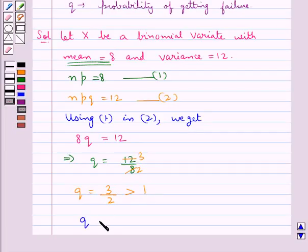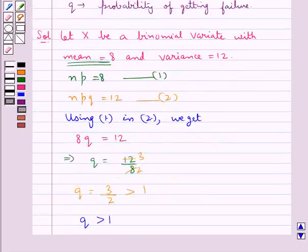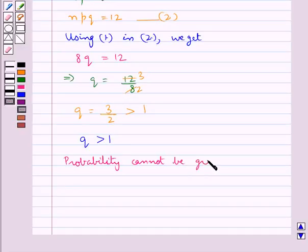We get q > 1, and we know that q is the probability of getting failure. Also, we know that probability cannot be greater than 1.